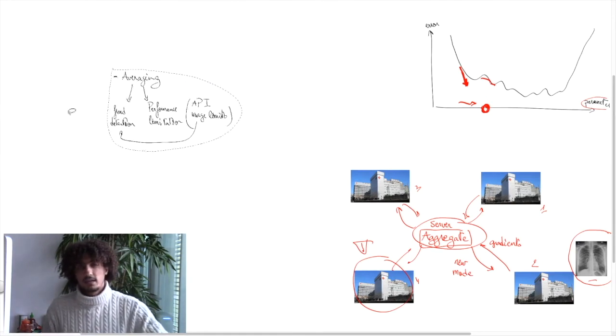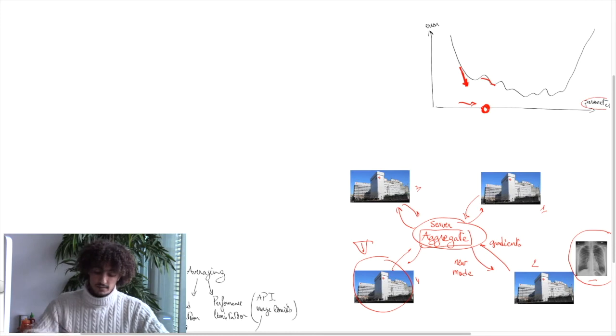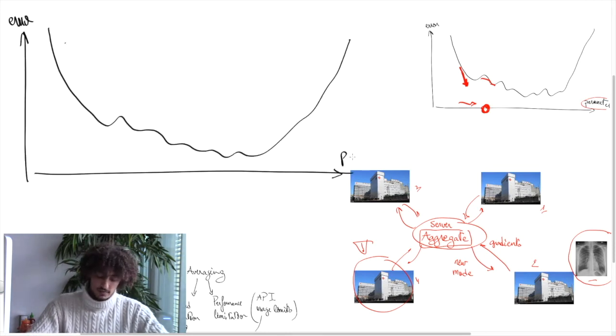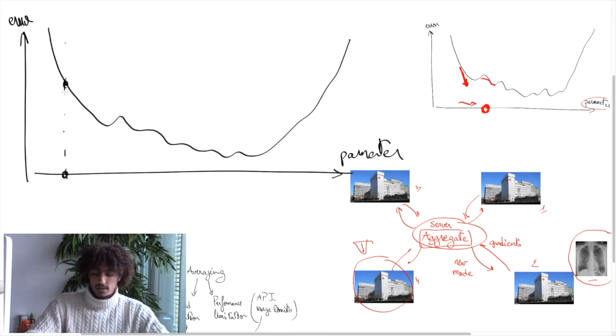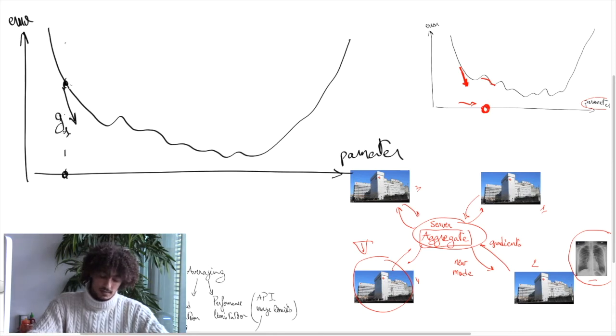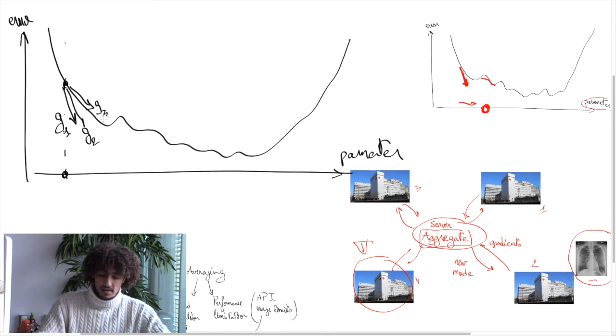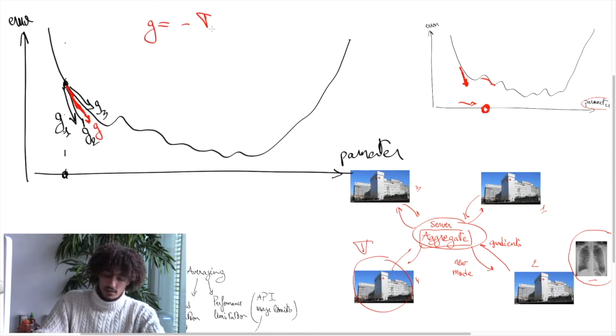So if we look at the problem again from the cost function perspective, at each step, the collective parameter is somewhere here. First worker is honest, sending a gradient that's something like this. Second worker is honest, third worker is honest. They are all sending gradients that somehow approximate the correct one. G is minus the gradient of the cost function at point x. Obviously, if you have a malicious worker sending a vector that is not following this gradient, taking the average wouldn't work.